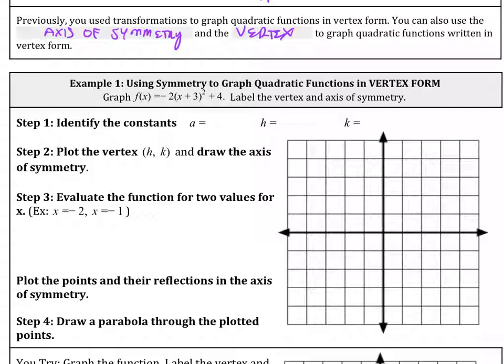The first thing we want to do is identify our constants. This is negative 2. Inside here, remember the formula, that is actually a negative 3 because we know that it moves to the left 3. Then we have our k value at the end which is a positive 4. What's nice about vertex form is that we can read the vertex. Our vertex is at negative 3, 4.